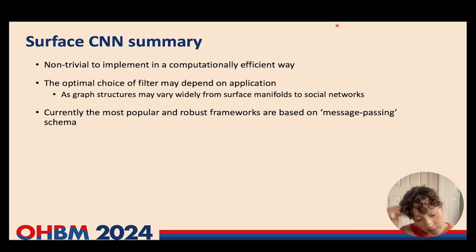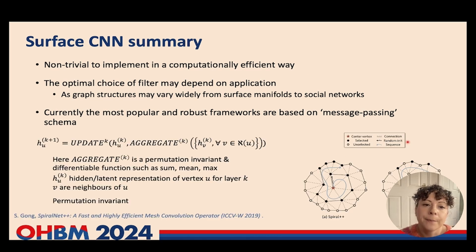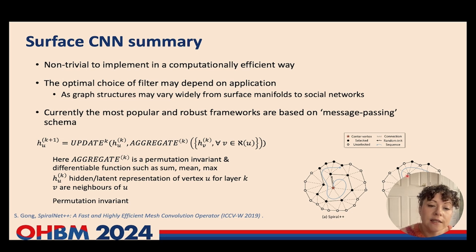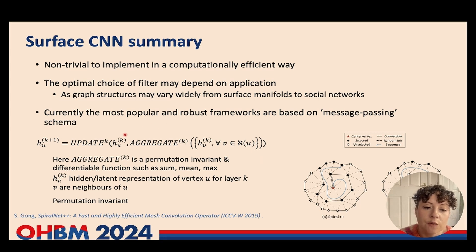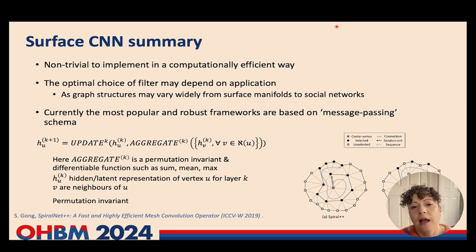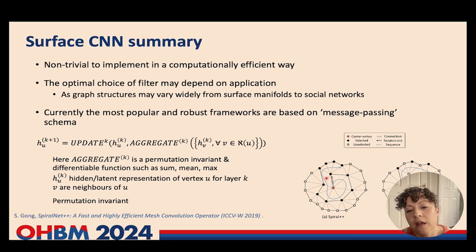The field continues to evolve with the advent of message-passing schema, which define convolutional operations from some sort of generic aggregation function such as a sum, mean, or max. These can learn powerful filters that put no constraints on the parameters of the network and learn to be invariant to the ordering of vertices and the number of vertices in any neighbourhood. Despite all these limitations, we can do some really powerful things with surface convolutions — I'm not trying to discredit them at all.